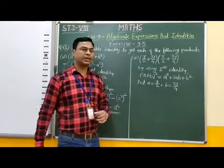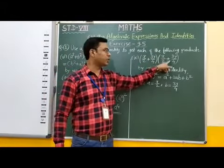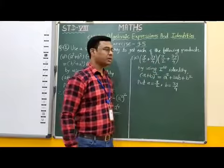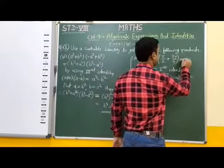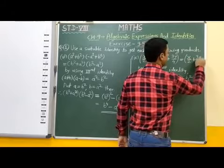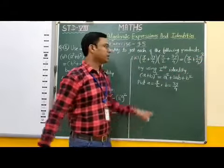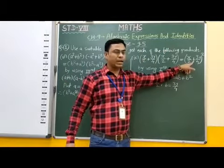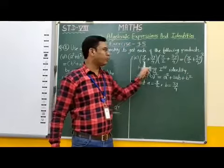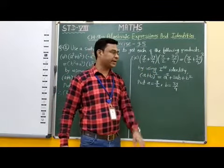Now students, the next question: x by 2 plus 3y by 4, multiplied by x by 2 plus 3y by 4. Here we have multiplication of two identical brackets, so we can write it as bracket squared: x by 2 plus 3y by 4, whole bracket squared. Here we have addition of two terms and bracket square, so we can find the product by using the first identity.